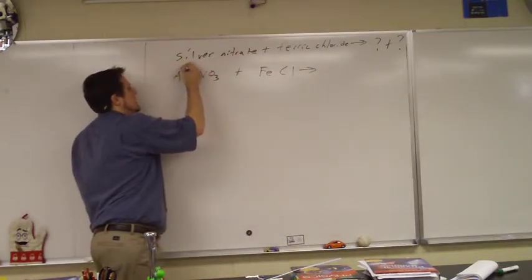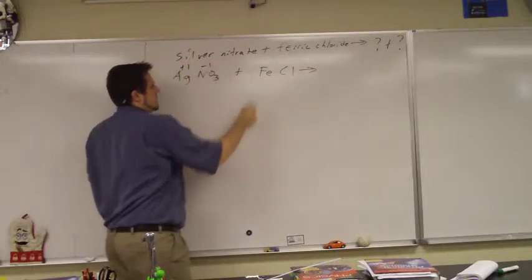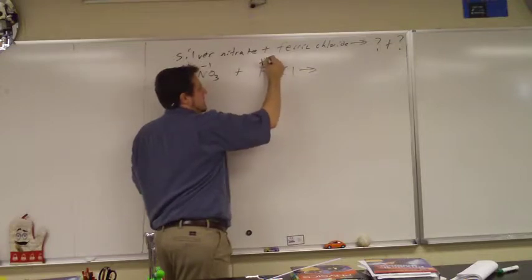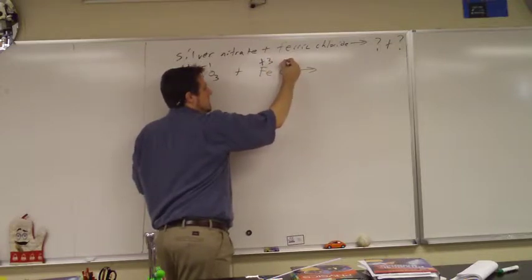Silver is what? Plus 1. What's nitrate? Minus 1. Really? What's this iron? It's ferric, so it's plus 3. And this chlorine? Minus 1.